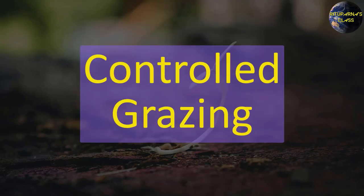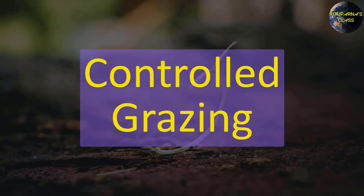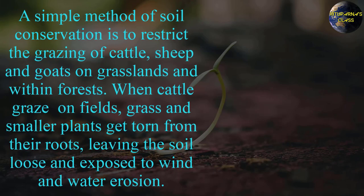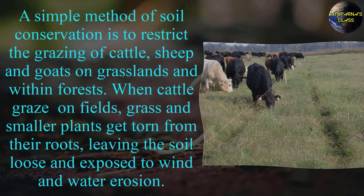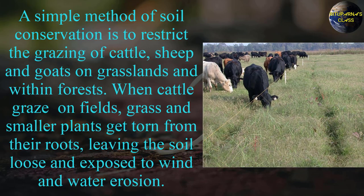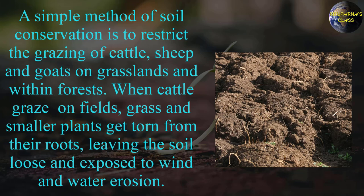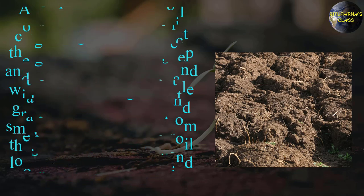Next is controlled grazing. A simple method of soil conservation is to restrict the grazing of cattle, sheep, and goats on grasslands and within forests. When cattle graze on fields, grass and smaller plants get torn from their roots, leaving the soil loose and exposed to wind and water erosion.